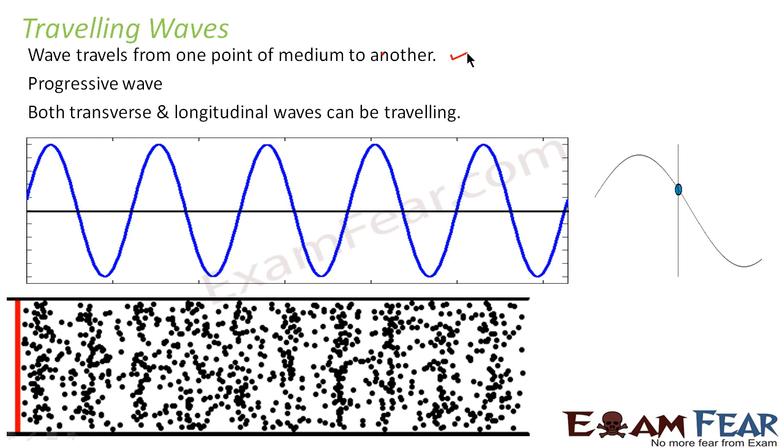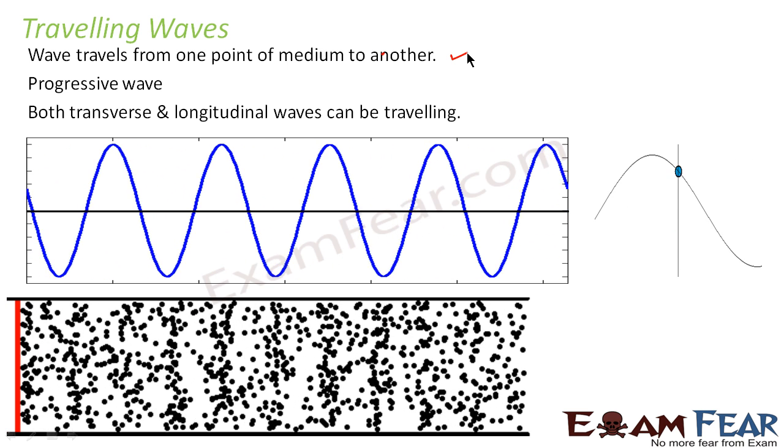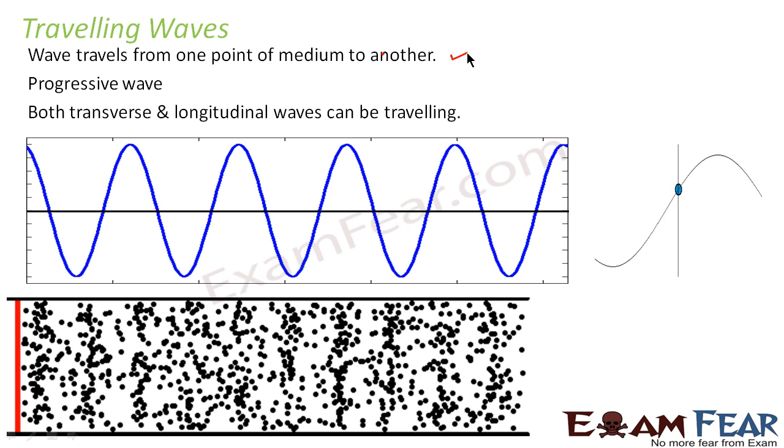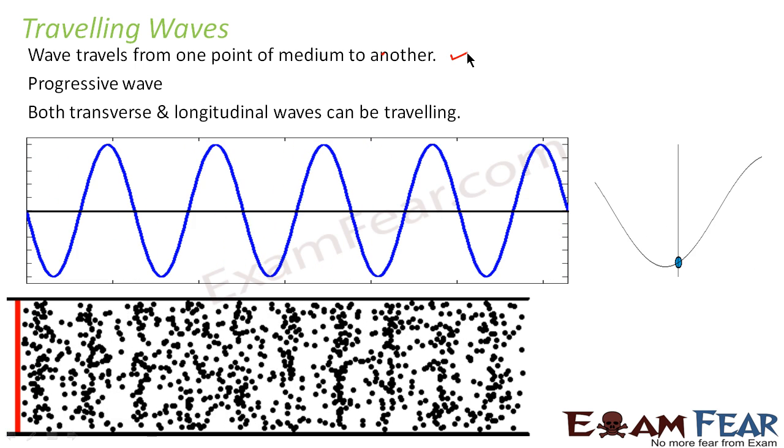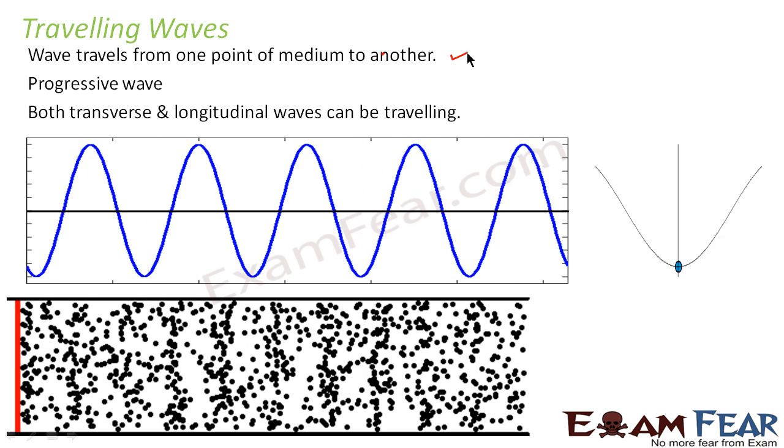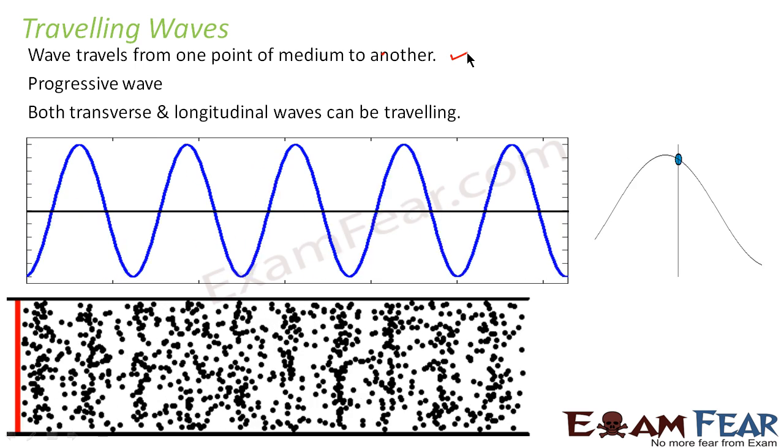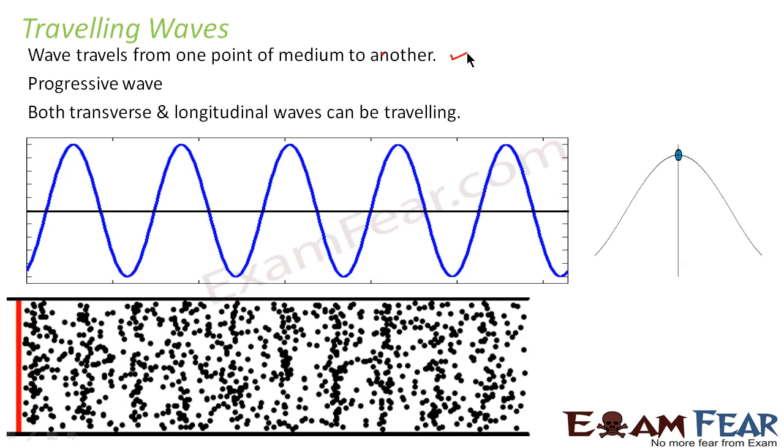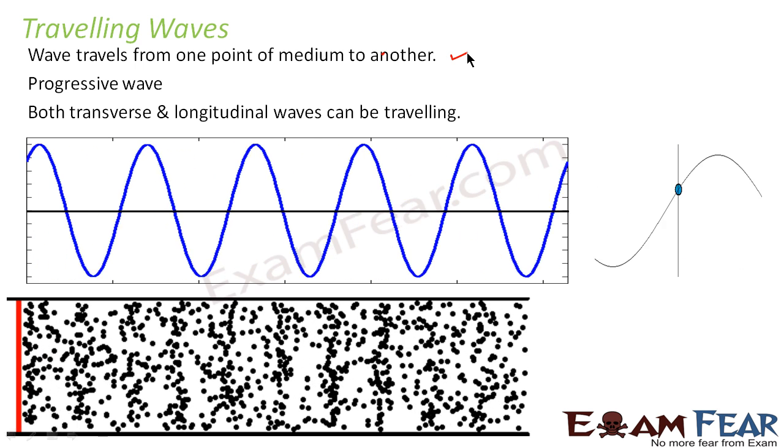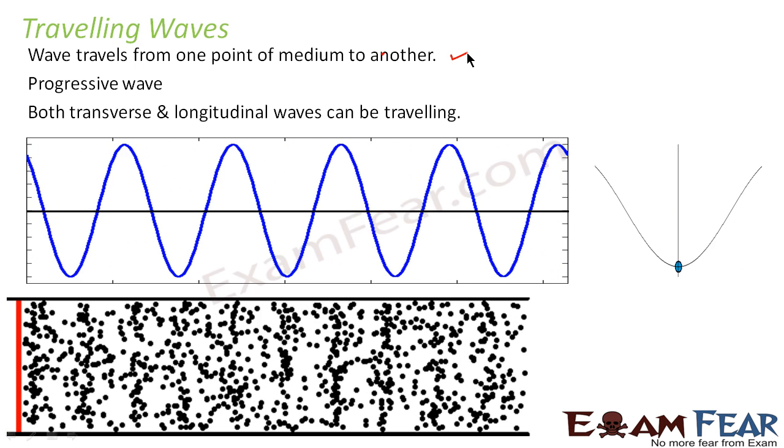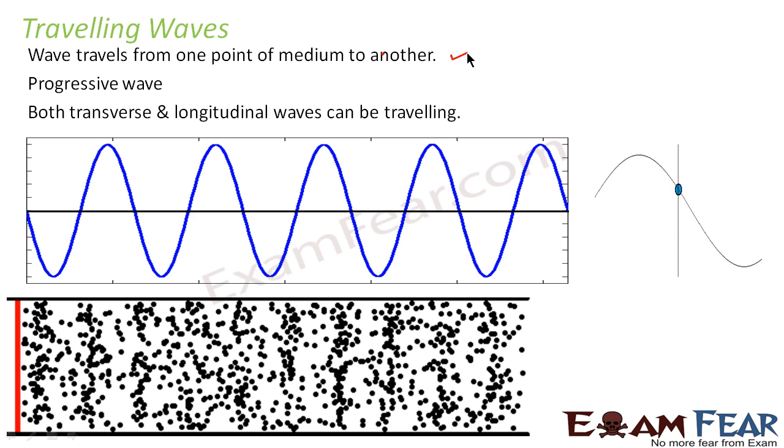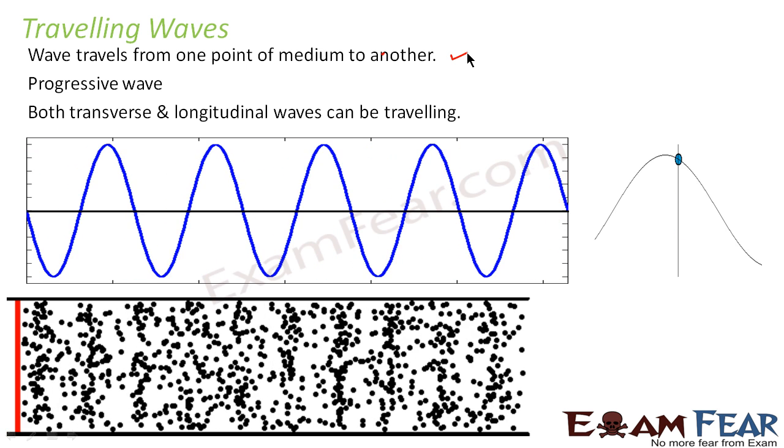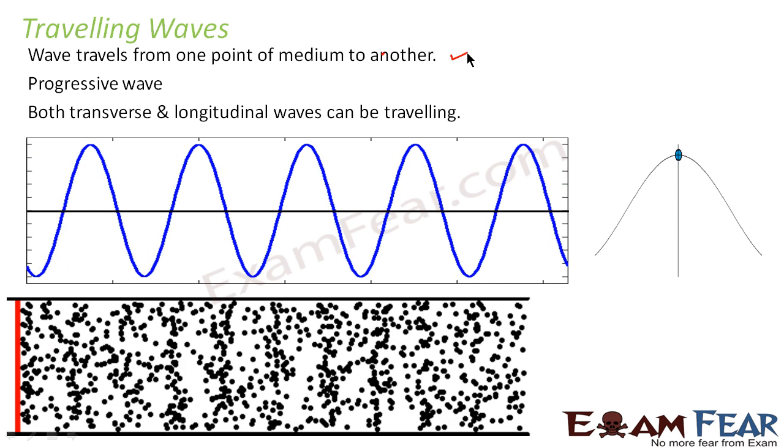Now that I have discussed some of the types of waves, not all yet, because we are still left with standing waves. Standing waves is something which we will discuss in the second half of the chapter, basically because the concept of standing waves is quite different than all these waves. So basically in the first half of the chapter we will discuss only about the different properties of waves, the different parameters or the different terms which you should know related to waves.